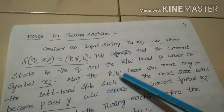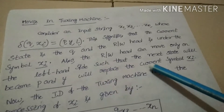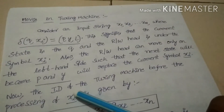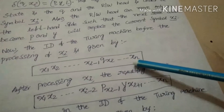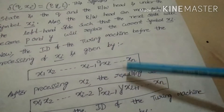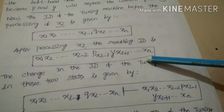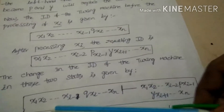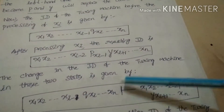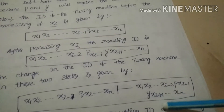The instantaneous description of the Turing machine processing Xi is given by: X1, X2, ..., Xi-1, Q, Xi, ..., Xn. After processing Xi, we get: X1, X2, ..., Xi-2, P, Xi-1, Y, Xi+1, ..., Xn. This change in the ID of the Turing machine between these two states is shown as: X1, X2, ..., Xi-1, Q, Xi, ..., Xn yields X1, X2, ..., Xi-2, P, Xi-1, Y, Xi+1, ..., Xn. When i = 1, the resulting ID of the Turing machine is: P, Y, X2, X3, ..., Xn.